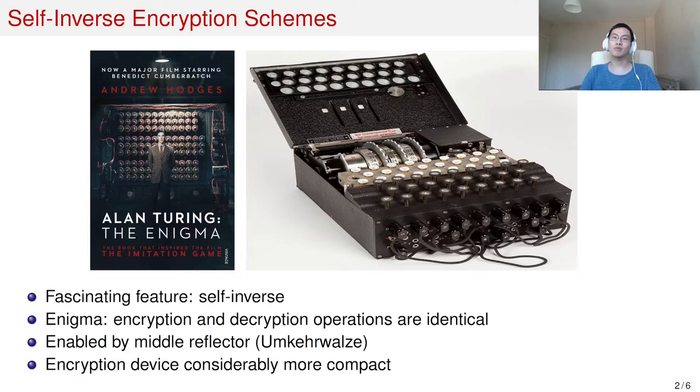Cryptographers have long been fascinated by the self-inverse property of encryption devices. An example is the Enigma rotor machine, where the encryption and decryption operations are identical. This is enabled by the middle reflector, which makes the encryption device much more compact.